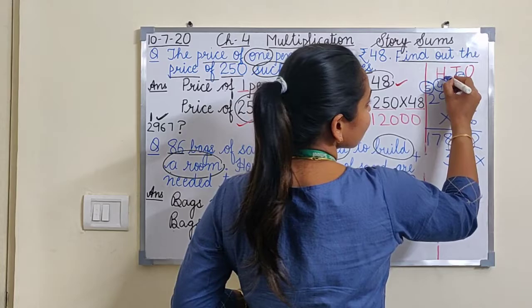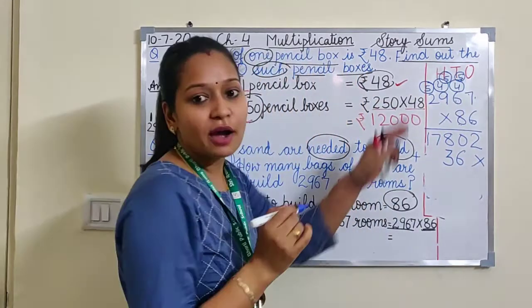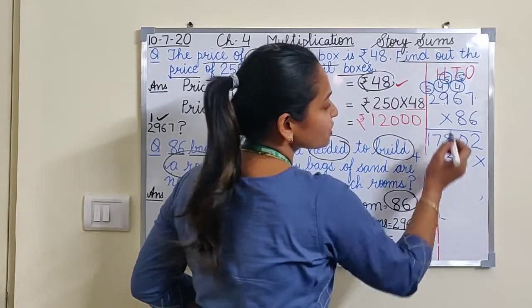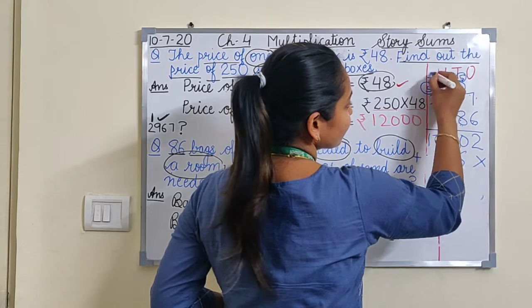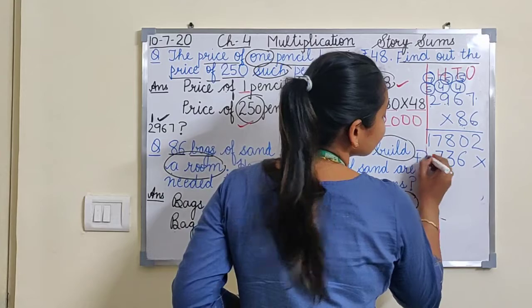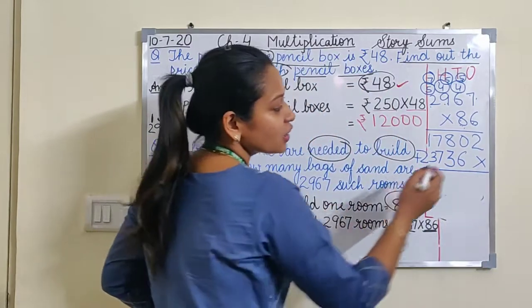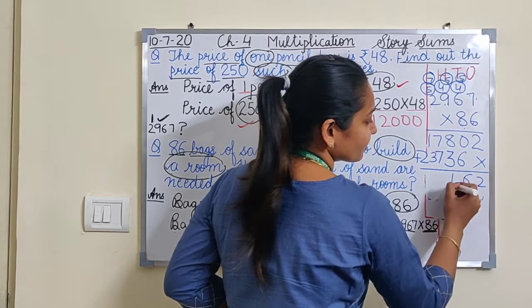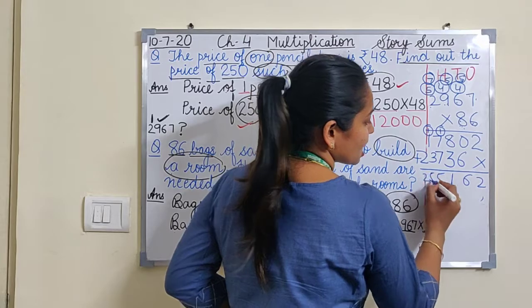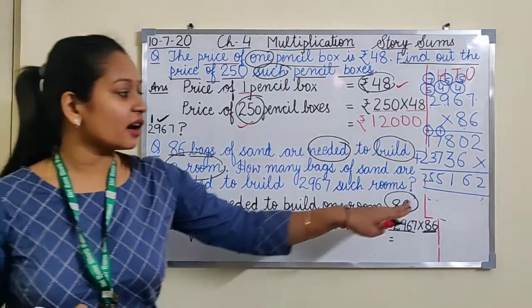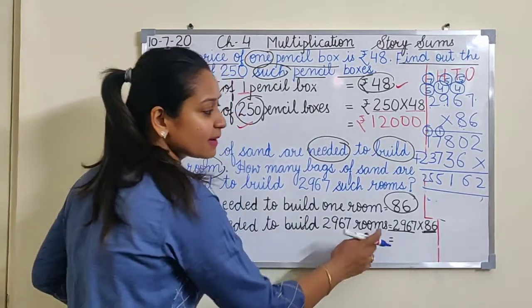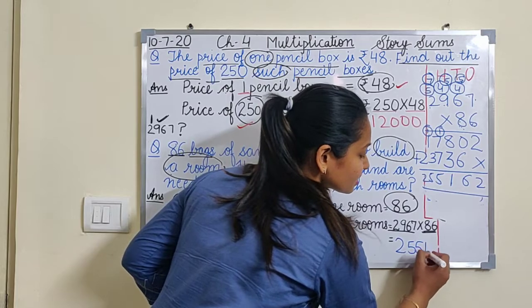3 here 5 carry. You have to always circle the carry. 8 nines are 72, 72 plus 5 is 77. 8 twos are 16, 16 plus 7 is 23. So let's add these: 2, 6... 2,55,162. So this is the answer. So how many bags are needed to build these many rooms? 2,55,162.